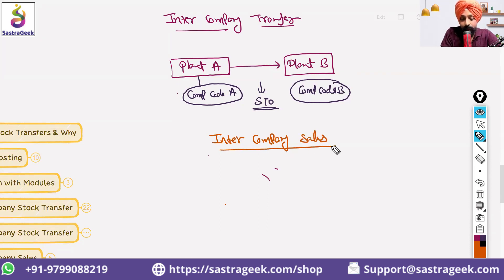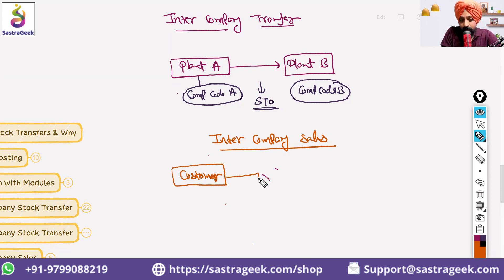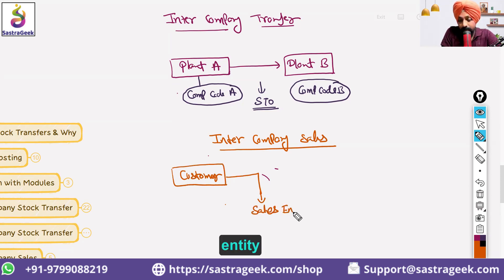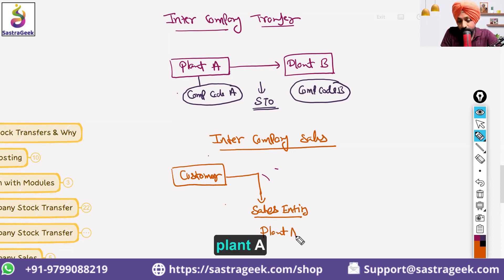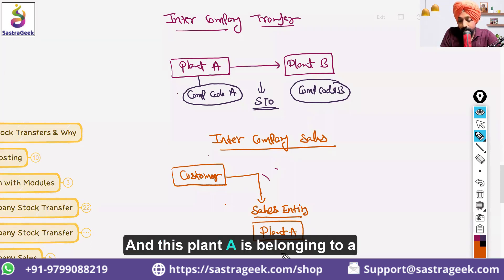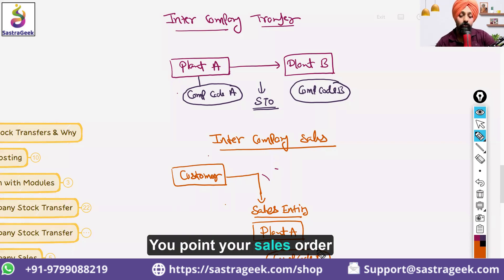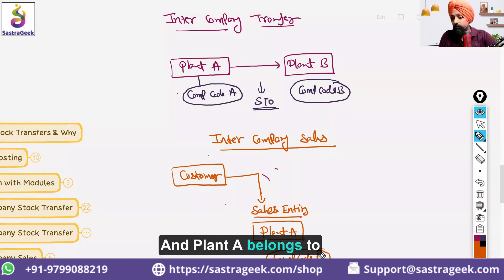Intercompany sales happens when you have a customer and the order comes to the sales entity — your sales organization — which belongs to Plant A, and Plant A belongs to Company Code A. Sales organization belongs to Plant A and Plant A belongs to Company Code A.